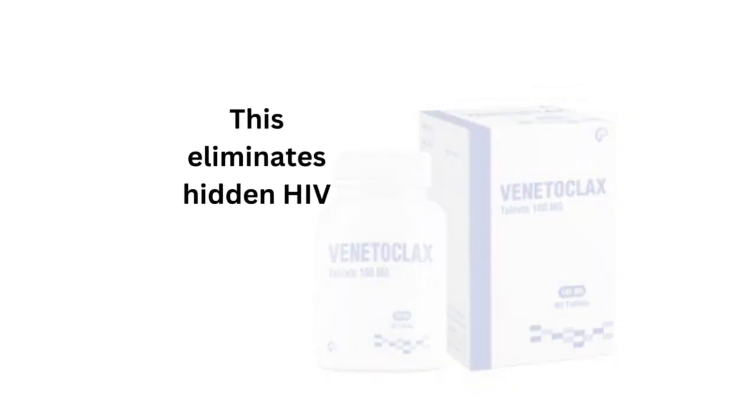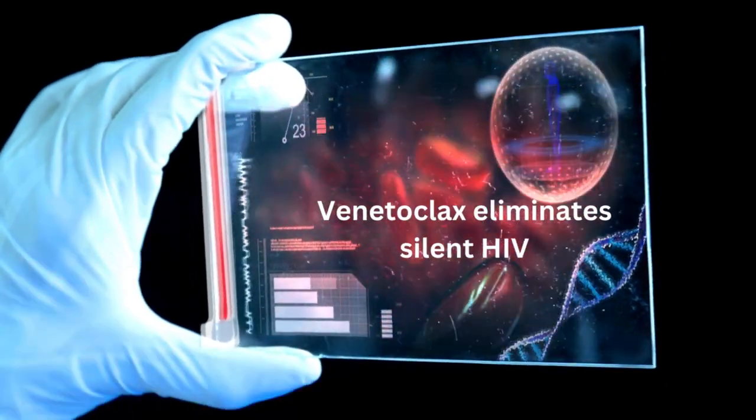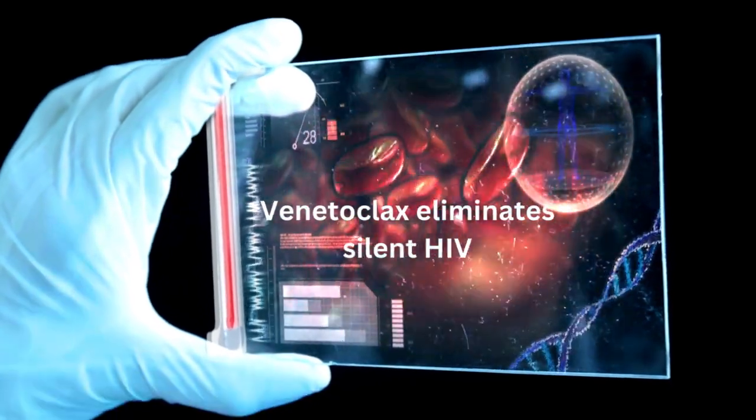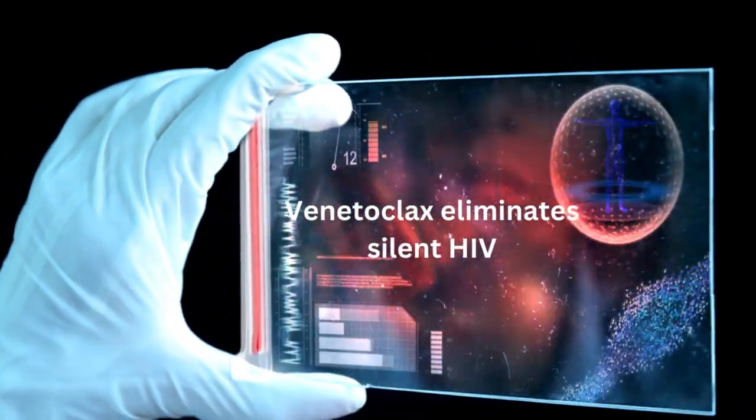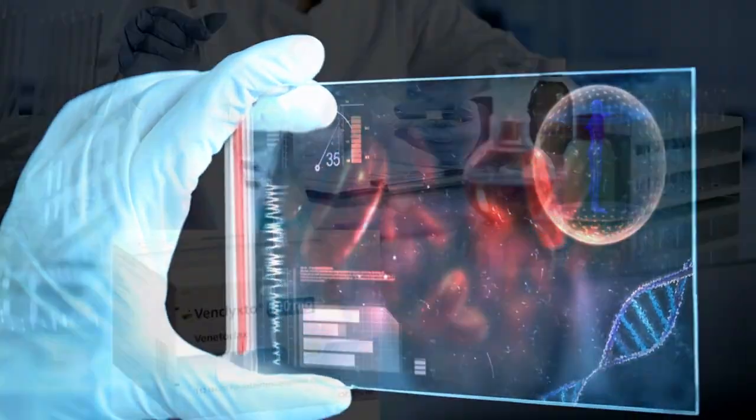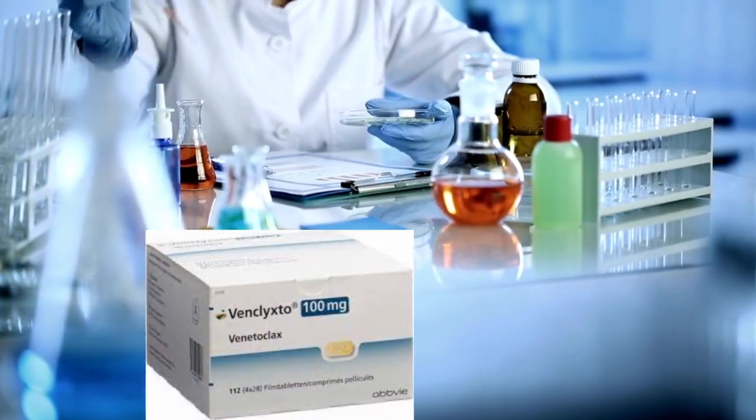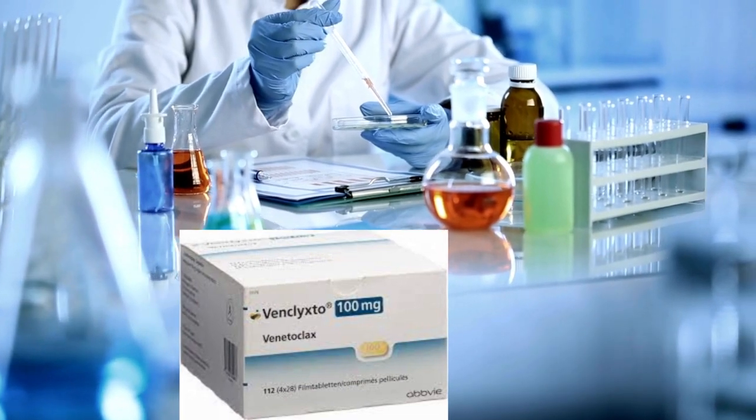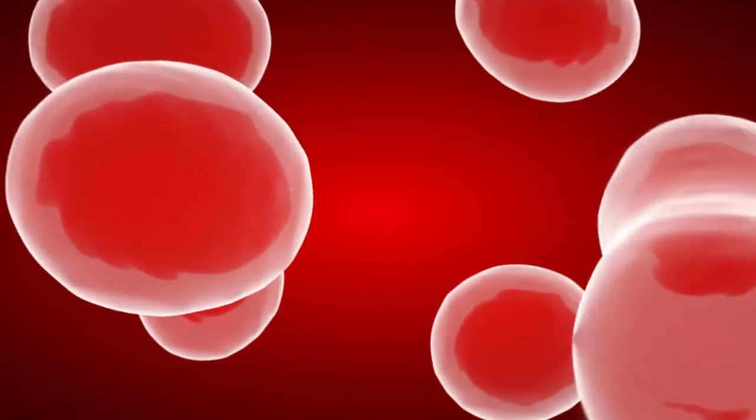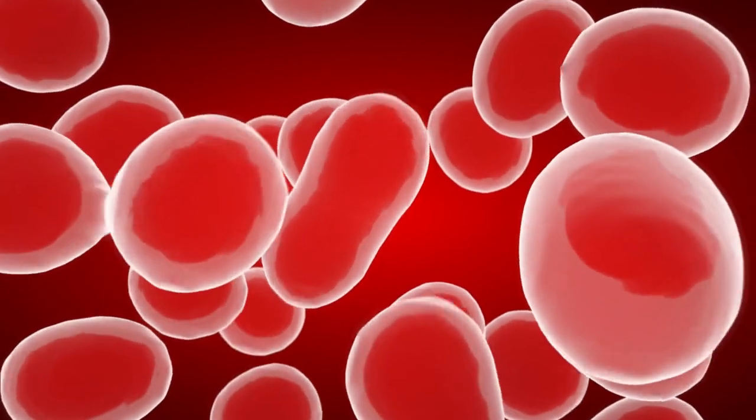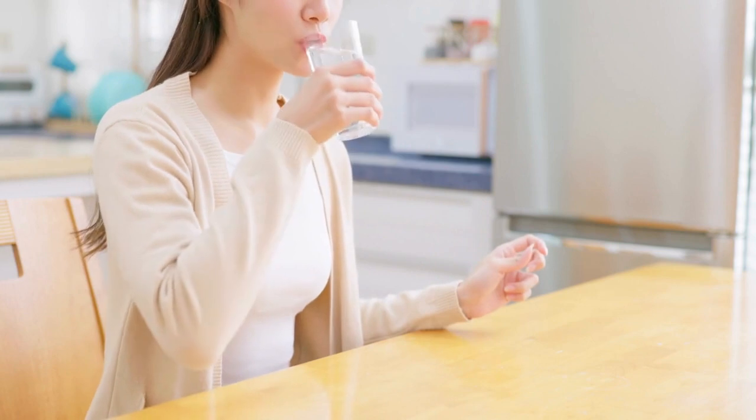A blood cancer medication called venetoclax may hold the key to curing HIV infection, according to a recent study by Australian researchers from Walter and Eliza Hall Institute and the Peter Doherty Institute. The drug has been found to target dormant or silent HIV cells, which are responsible for latent infections. This drug effectively eliminates the dormant HIV, unlike the HIV treatment you are taking now.